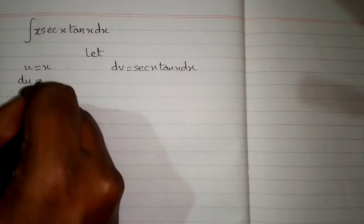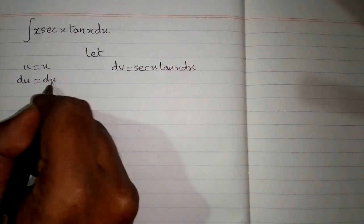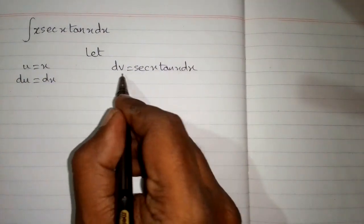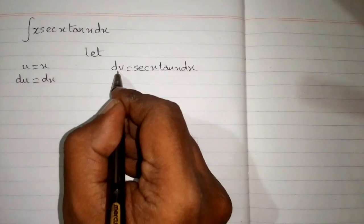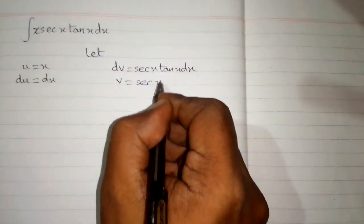The differential du equals the derivative of x, which is 1, multiplied by dx. So du equals dx. Now integrating both sides, the integral of dv is v, and the integral of sec x tan x is sec x.